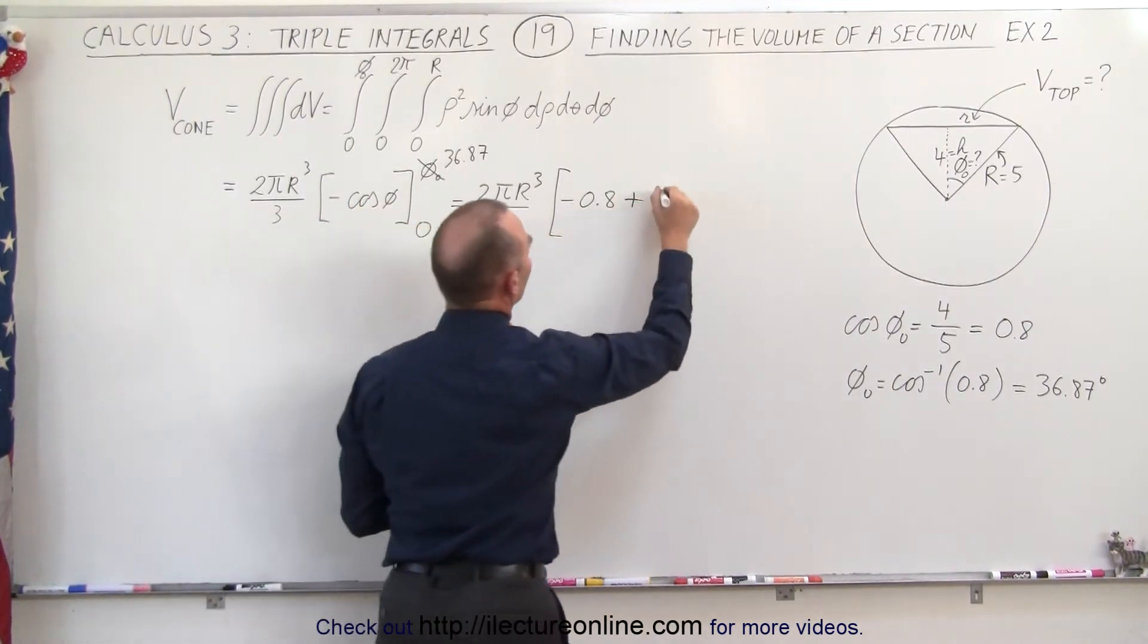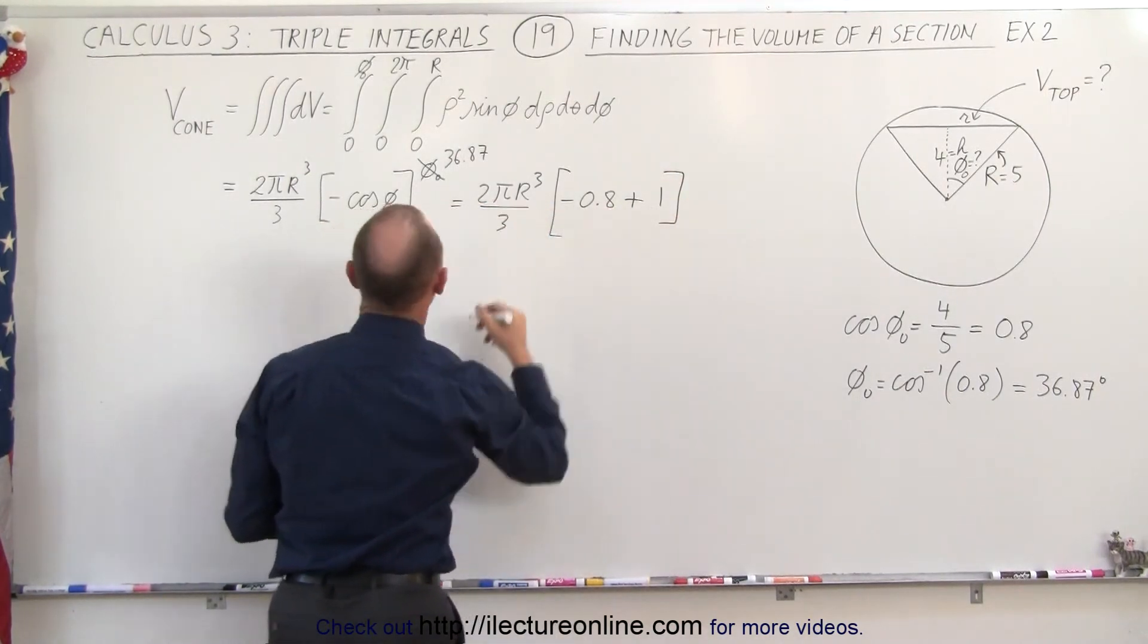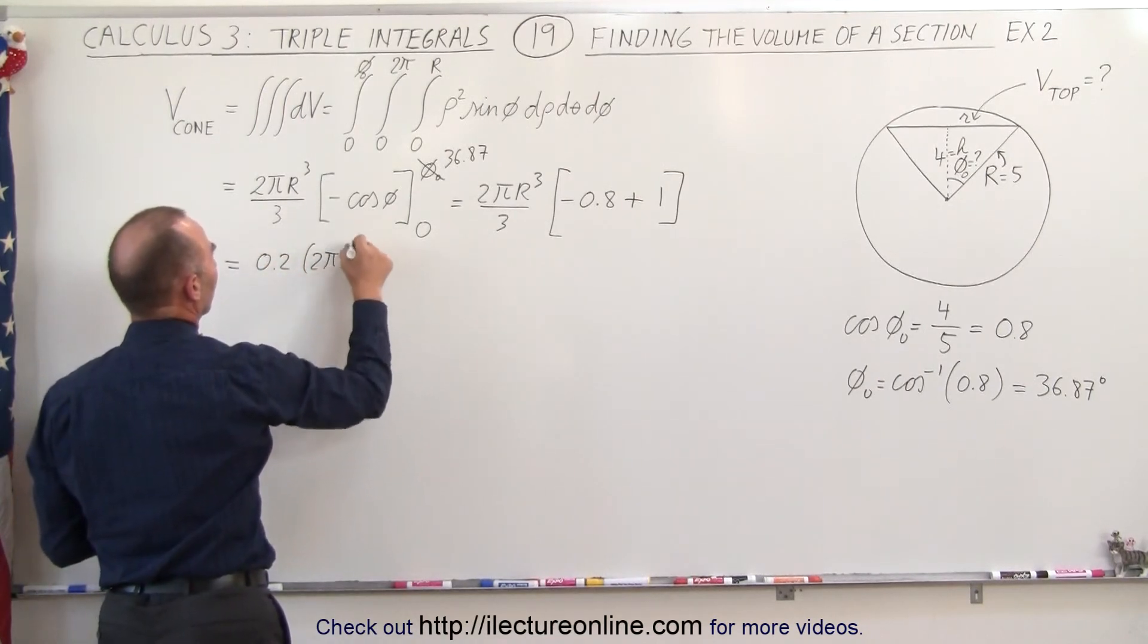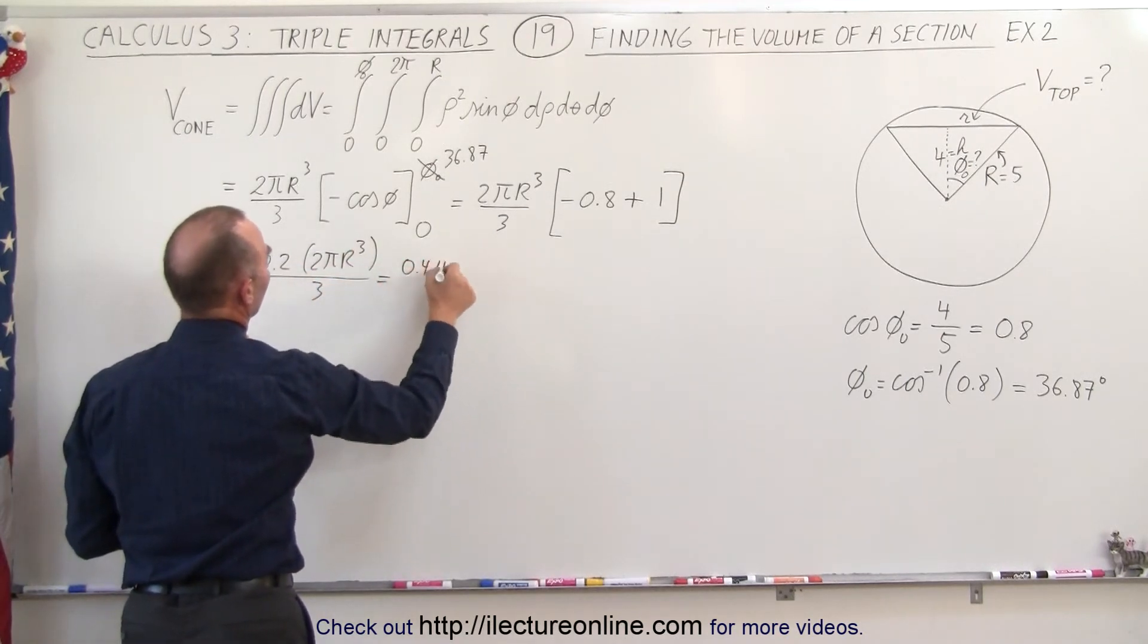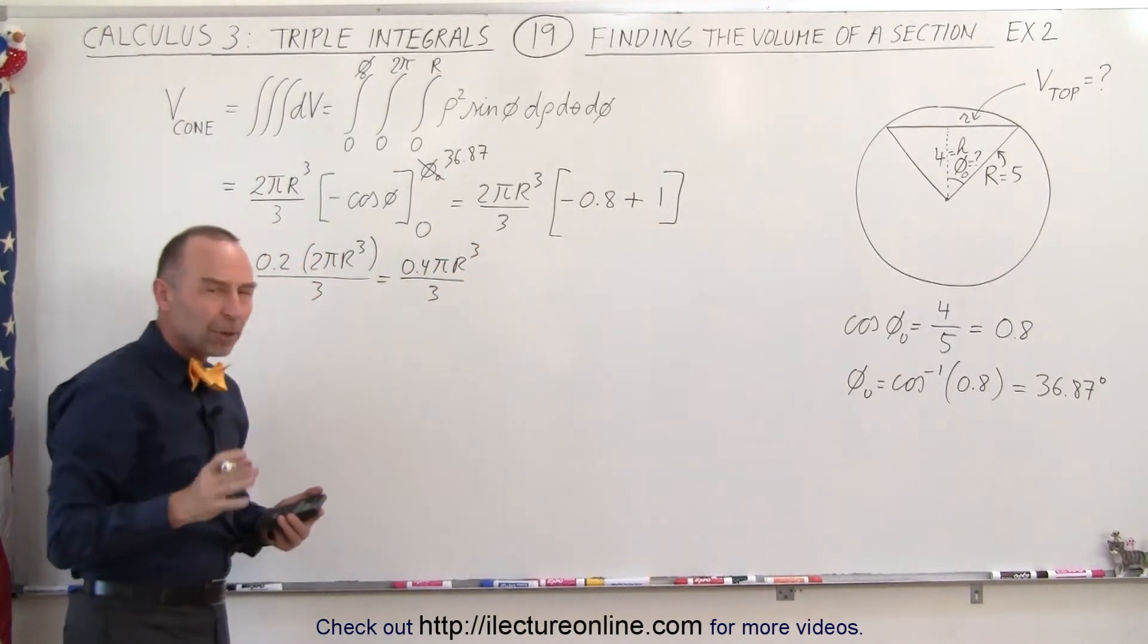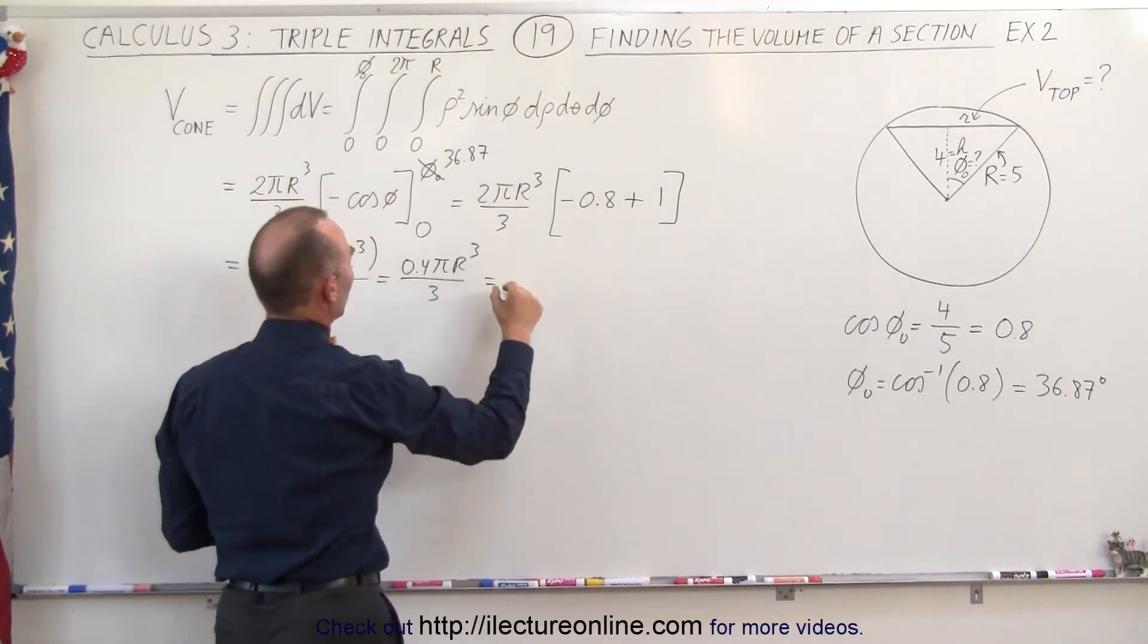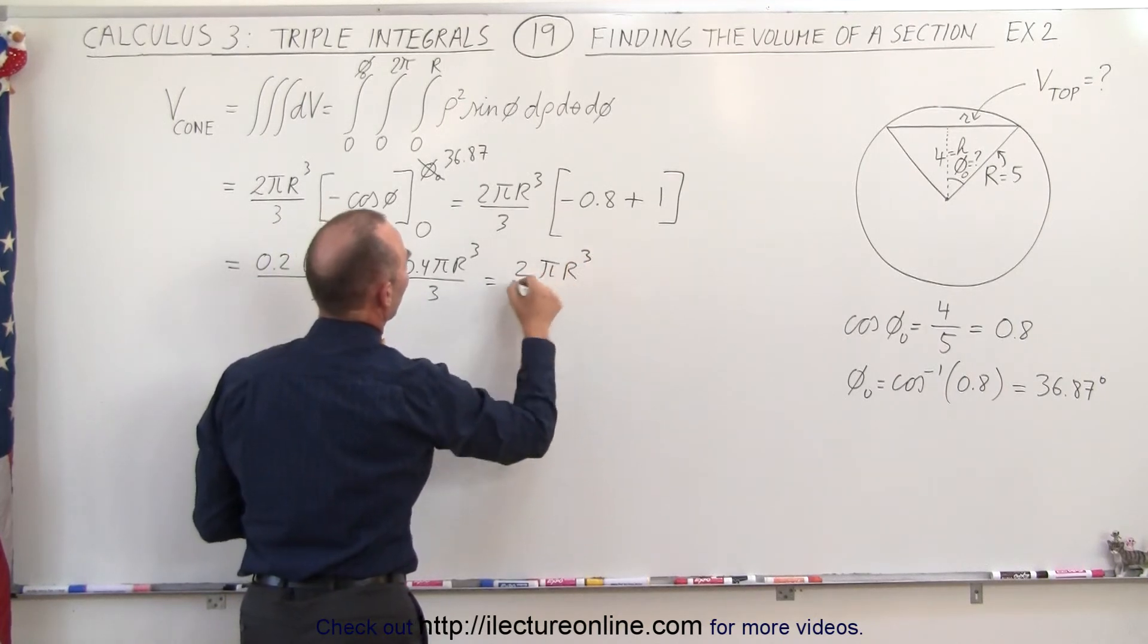And the cosine of 0 is equal to 1. And so it's equal to 0.2 times this, so this is equal to 0.2 times 2πr³/3, which is equal to 0.4πr³/3. And then if I multiply both the top and the bottom by 5 to get rid of this 0.4, then I get 2/15, 2πr³/15.